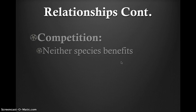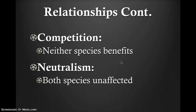Neutralism describes the relationship between two species that interact but do not affect each other. It describes interactions where the fitness of one species has absolutely no effect on that of the other. Neutralism is the most common type of interspecific interaction — neither population affects the other, and any interactions that do occur are indirect or incidental. An example is a tarantula living in a desert and cacti living in the same desert; neither one affects the other.